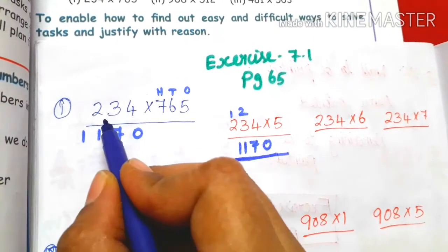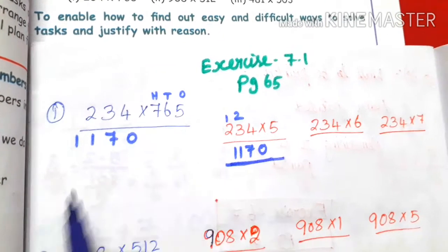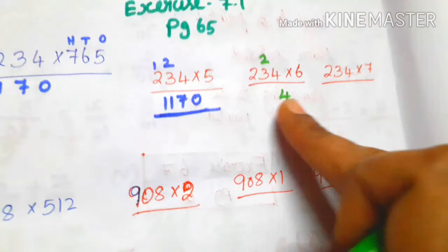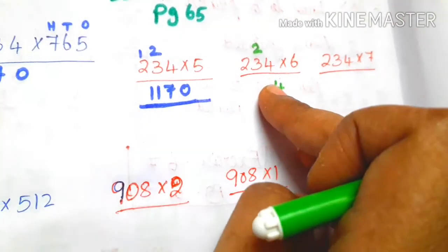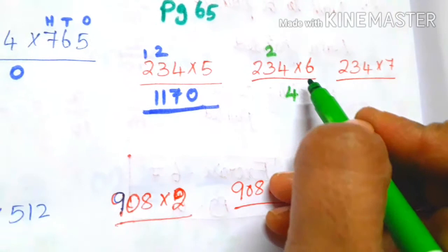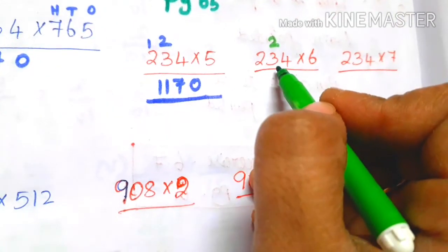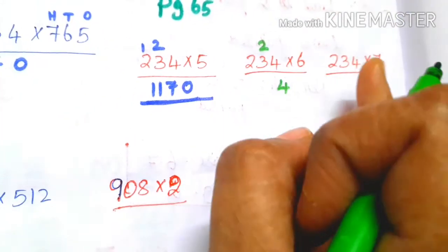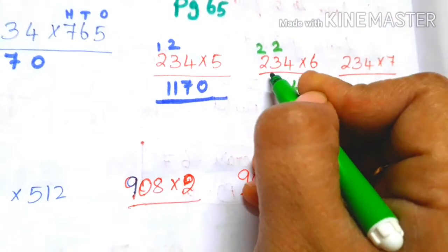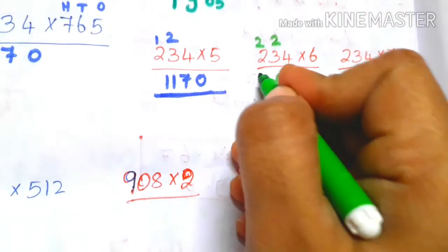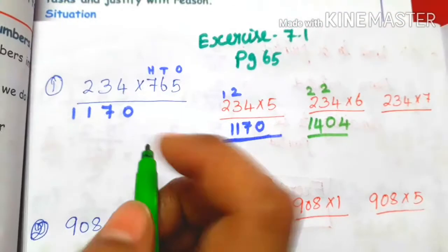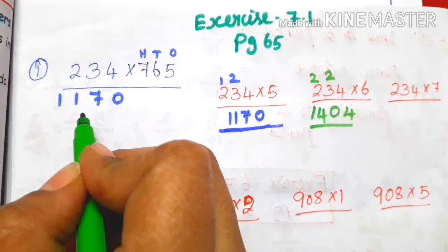Next, tens: 234 into 6. 6 into 4 is 24, so 4, balance 2. 6 into 3 is 18, plus 2 is 20, so 0, balance 2. 6 into 2 is 12, plus 2 is 14. So the result is 1404. So 1 plus 4 gives the tens-place partial product.